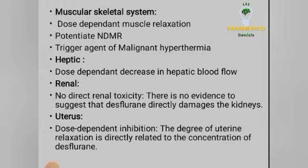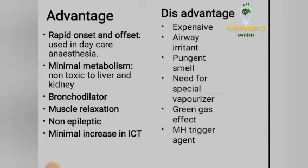Musculoskeletal system: desflurane produces dose-dependent muscle relaxation and potentiates non-depolarizing muscle relaxants (NDMR). It is a trigger agent for malignant hyperthermia. Hepatic: it produces a dose-dependent decrease in hepatic blood flow. Renal: there is no evidence that desflurane directly damages the kidneys — indirect renal toxicity only. Uterus: desflurane produces dose-dependent uterine relaxation, with the degree of relaxation directly related to concentration.